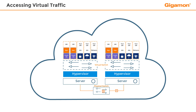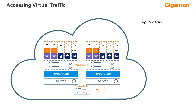The virtual switch, running in promiscuous mode, would then allow all packets to be visible to the tools attached to this virtual switch. This lessens tool sprawl but increases complexity in duplicate traffic.